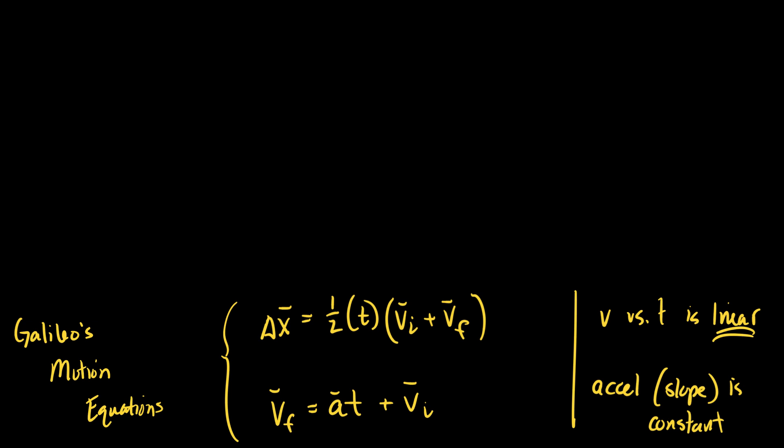So the easiest way for you to do it is substitution. You'll notice one of these equations is already solved for final velocity. So we're going to use substitution. We'll take all of this and place it where final velocity is. That's substitution. I'm going to leave the vector bars off for a few minutes just so it's not super messy. So I'll get delta x equals one-half times t times v initial plus at plus v initial. That's created a new equation that has eliminated final velocity. Do you notice no final velocity there?